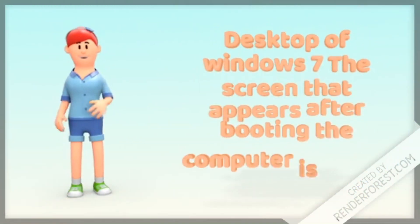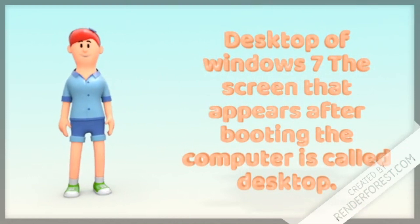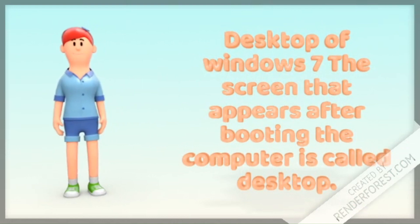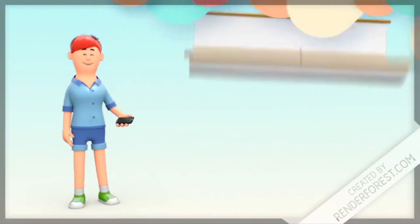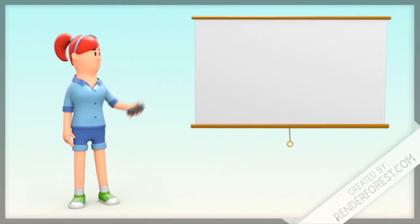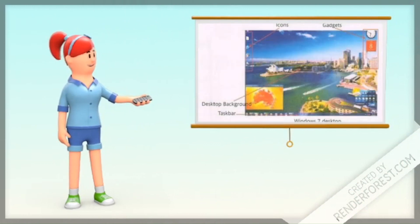Desktop of Windows 7: The screen that appears after booting the computer is called the desktop. It has 4 components: desktop background, taskbar, icons, and gadgets.